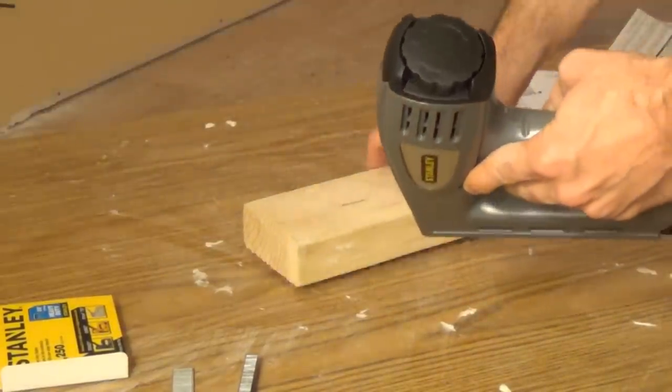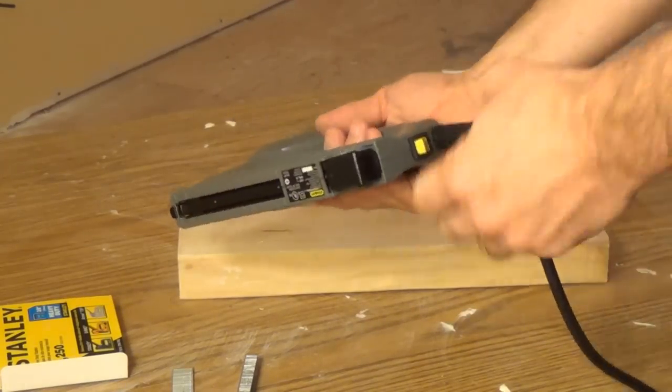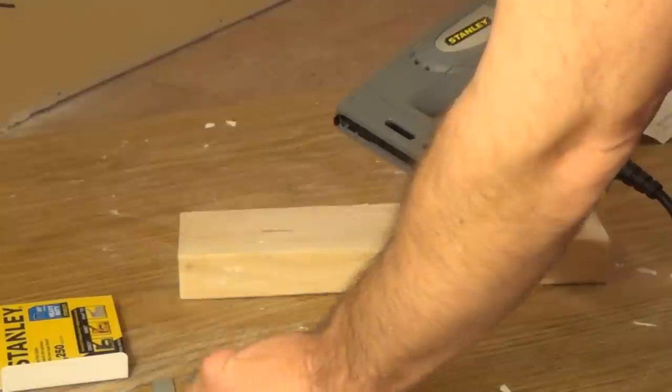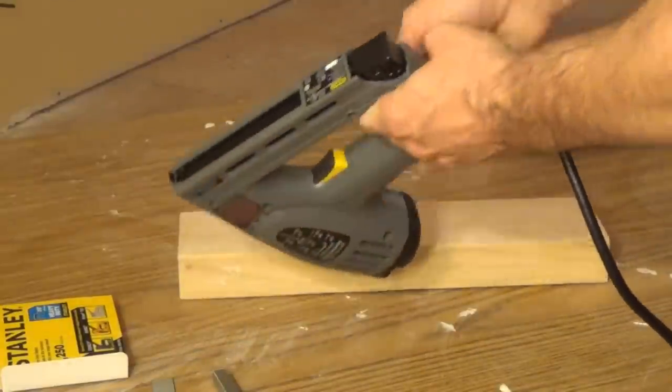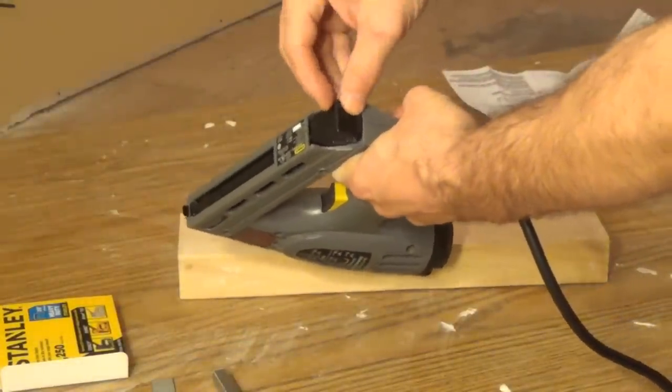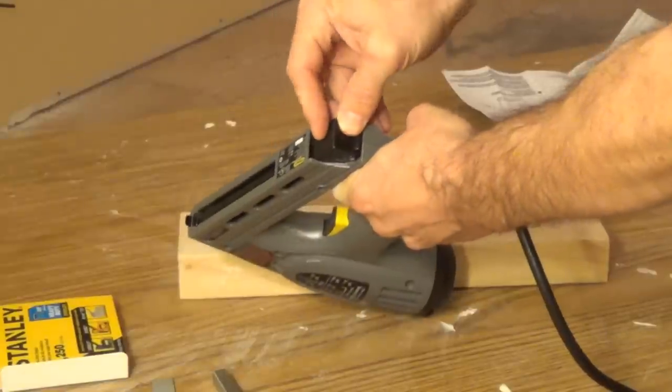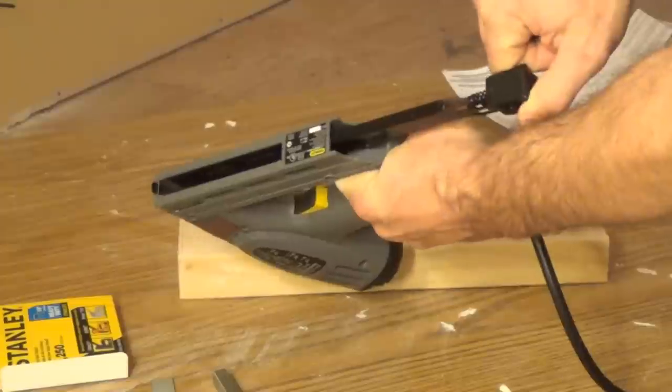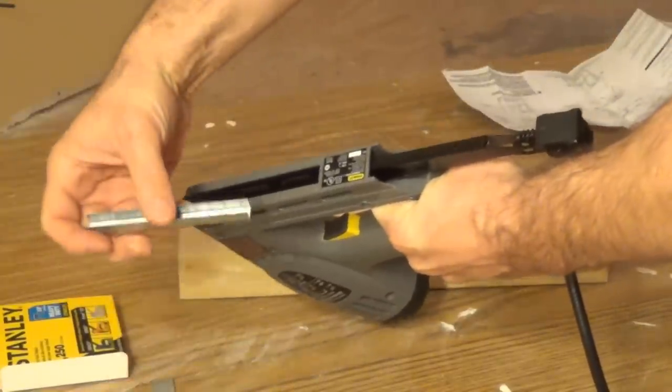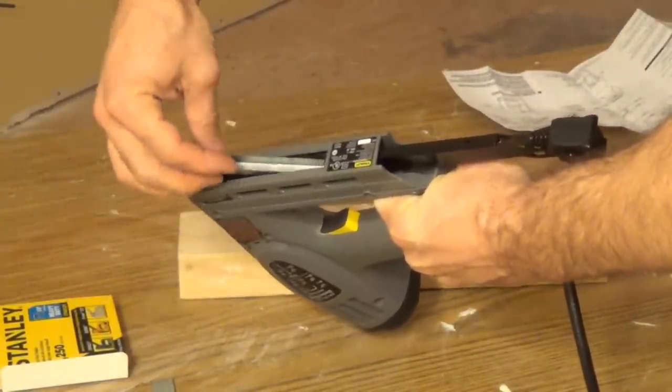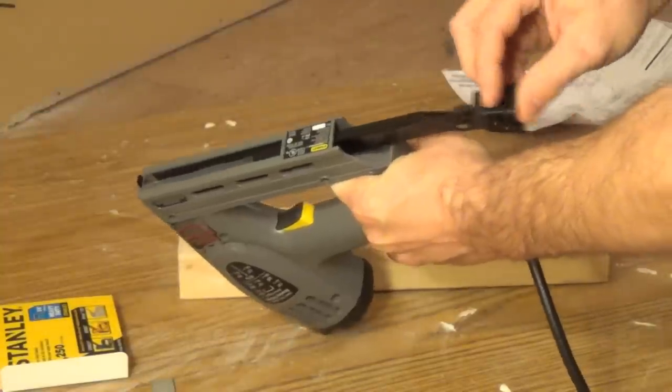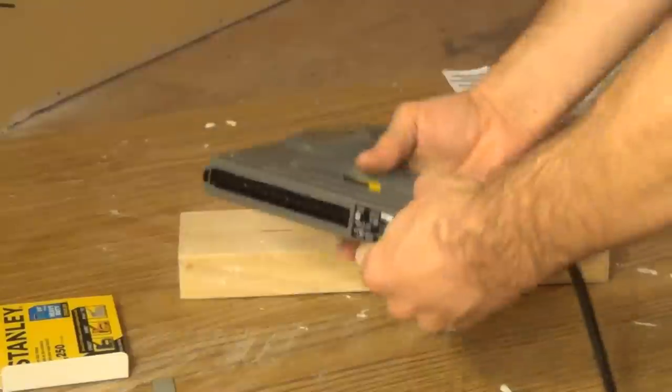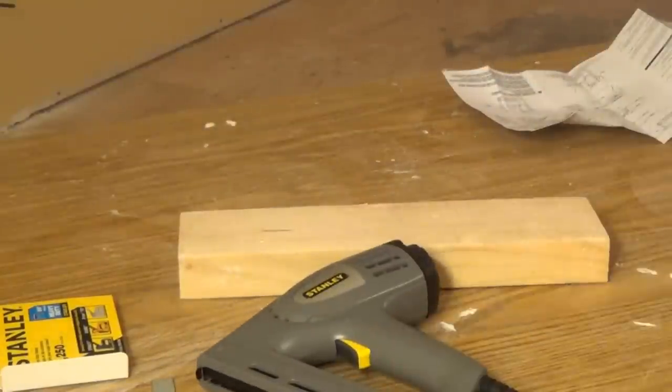It does come with instruction manuals which sort of help you out. The first thing is just to load it up with some staples. I got a clip of brads and staples here. Let's start with the staples. You just push on this back end here and it pops this portion out. Then you pull back - the whole thing doesn't come out - and then you just take your clip and put it straight in just like that. Then close it up and make sure the bottom is secure.